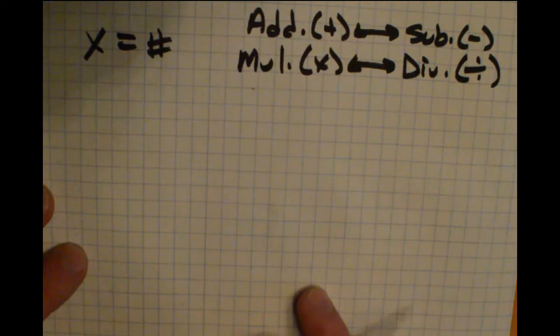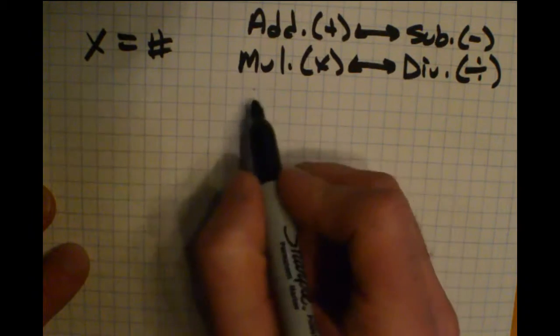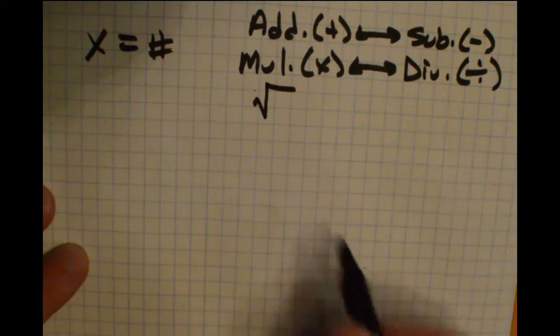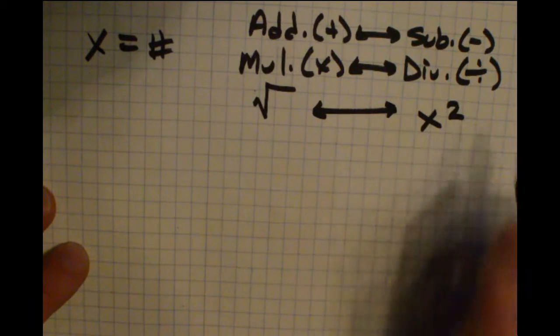Now, we're going to take a look at equations that have sort of a new operation. We're going to take a look at some that have a square root. And the inverse of that is to square.